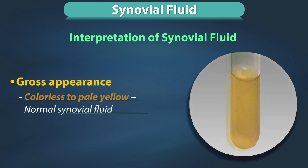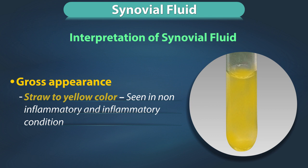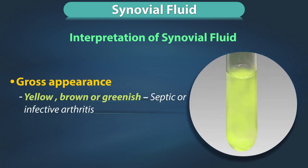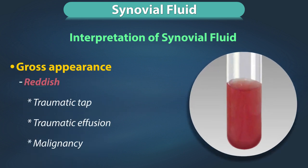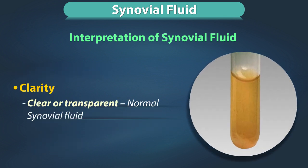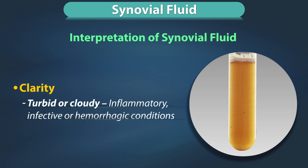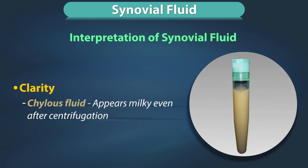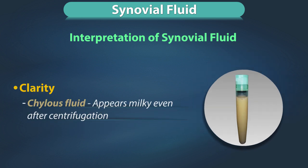Interpretation of synovial fluid based on gross appearance: colorless to pale yellow indicates normal synovial fluid. Straw to yellow color can be seen in non-inflammatory and inflammatory conditions. Yellow, brown, or greenish color indicates septic or infective arthritis. Reddish color indicates traumatic tap, traumatic effusion, hemarthrosis, or malignancy. Clear or transparent fluid is normal synovial fluid. Turbid or cloudy indicates inflammatory, infective, or hemorrhagic conditions. Chylous fluid appears milky even after centrifugation.